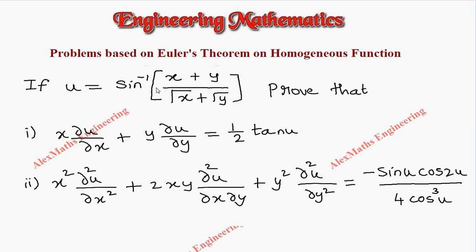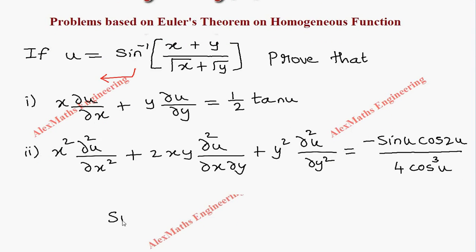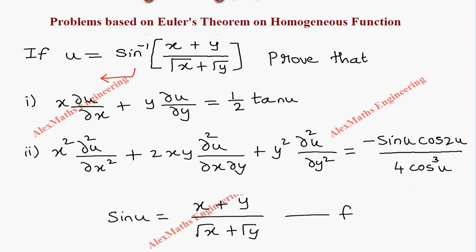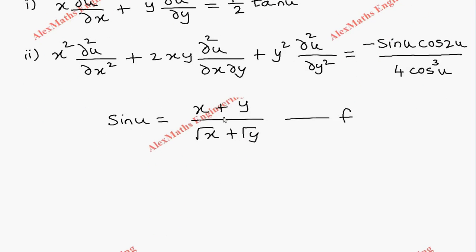Let's take the sine inverse to the other side, so it will become sine u. So sine u equals x plus y divided by root x plus root y. We will take this as function f. So f is both sine u as well as (x + y)/(root x + root y). Let's rewrite the function f as f(x, y) because it is in terms of x and y.